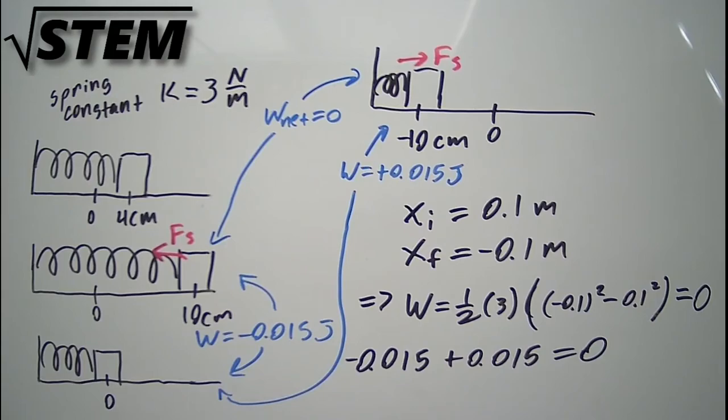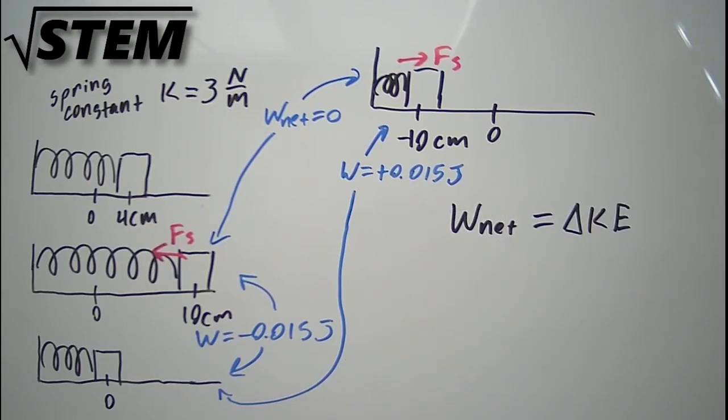Because the net amount of work done is equal to the change in kinetic energy, what we can infer from this is that the change in kinetic energy from plus 10 centimeters to minus 10 centimeters overall was zero.